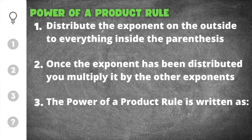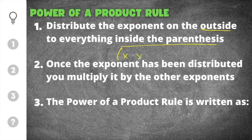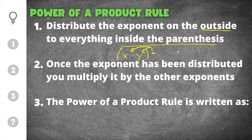We have three important things that we need to remember when solving for power of a product rule. The first thing we're going to do is distribute the exponent on the outside of the parentheses to everything inside of the parentheses. Just like when you're using the distributive property, when you're working with exponents, if you have an exponent on the outside, you have to distribute it to everything on the inside.